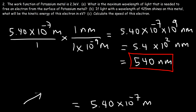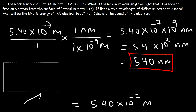Anything less than 540 nanometers wavelength will be enough to free an electron. So red light at 670 nanometers won't be strong enough to knock off an electron from potassium metal. But blue light with a wavelength of 480 nanometers will be enough to remove an electron from potassium metal. Red light usually doesn't have enough energy to knock off an electron from a metal surface, but blue light can for certain metals.